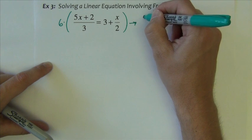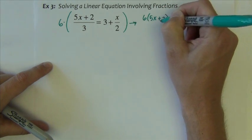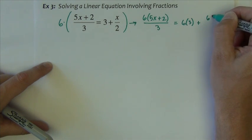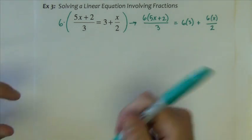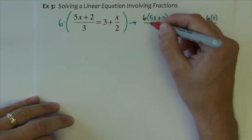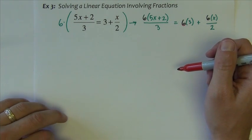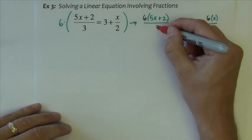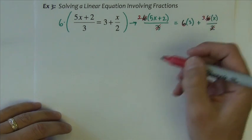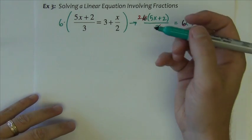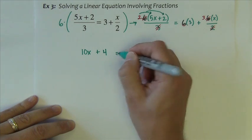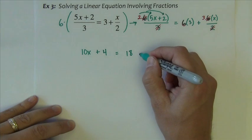So I'm going to multiply the fraction on the left by 6, multiply 6 times that 3, multiply the 6 times that x over 2. You can see that the entire equation is the same, except I've got these 6's multiplied to every term. The terms that involve fractions should reduce. This 3 divides into this 6 two times, this 2 divides into this 6 three times. Now we can use distributive property. The 2 distributing makes 10x plus 4 equals here we've got the 18, and here we're going to have plus 3x.